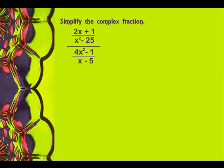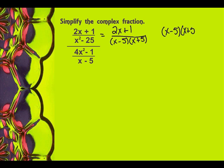Simplify the complex fraction. Once again, I look at my top and say, what's my common denominator? Well, to figure that out, first we're going to have to factor. So I'm going to have 2x plus 1 over x minus 5 times x plus 5 — because remember, it's the difference of squares. So x minus 5 times x plus 5 would be my common denominator in the top.